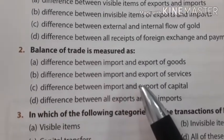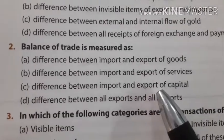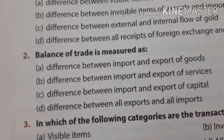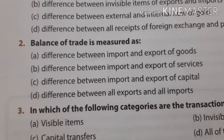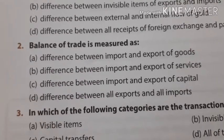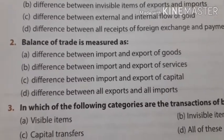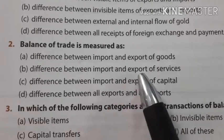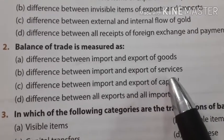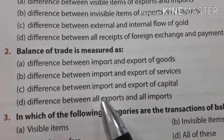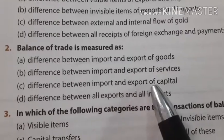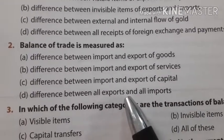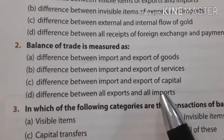Look at the second question. Balance of payment is measured as: first, difference between export and import of goods; second, difference between import and export of services; third, difference between import and export of capital; fourth, difference between all exports and all imports.